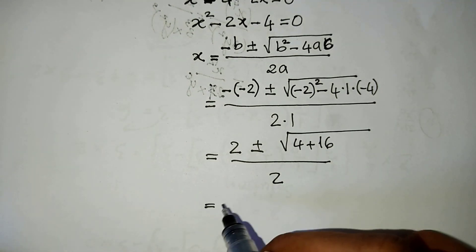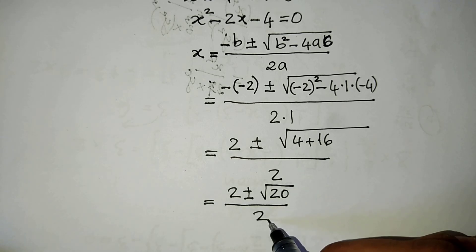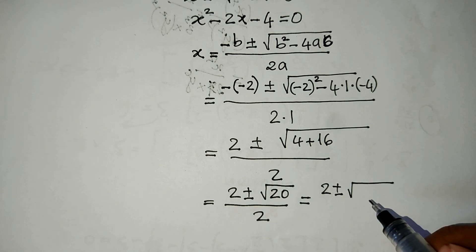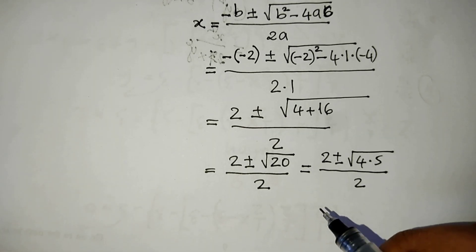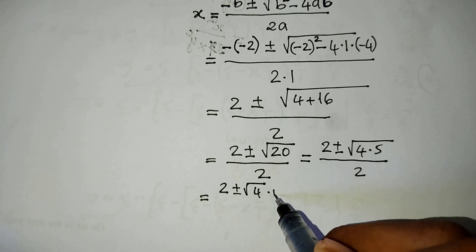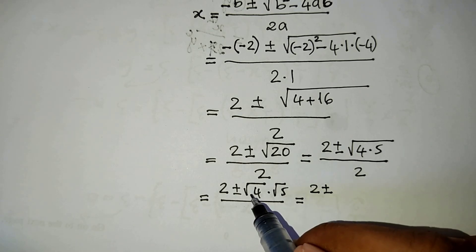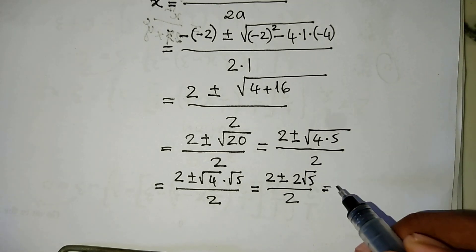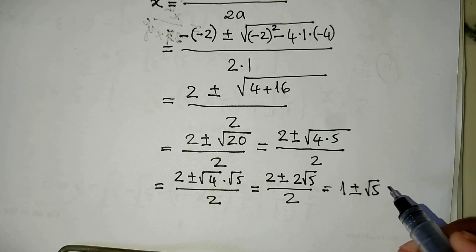We get 2 plus or minus square root of 4 plus 16, divided by 2. That equals 2 plus or minus square root of 20, divided by 2. Which equals 2 plus or minus square root of 4 times square root of 5, divided by 2. We get 1 plus or minus square root 5. That is our solution.